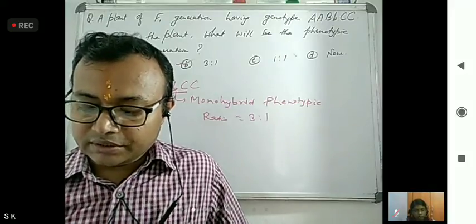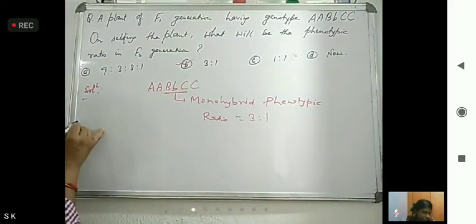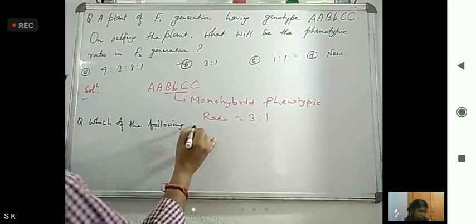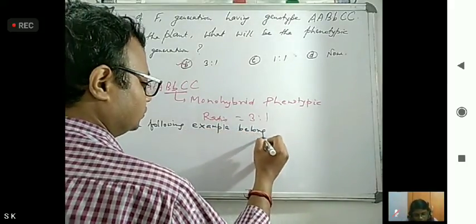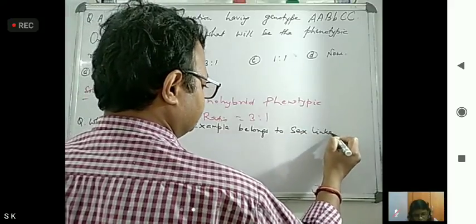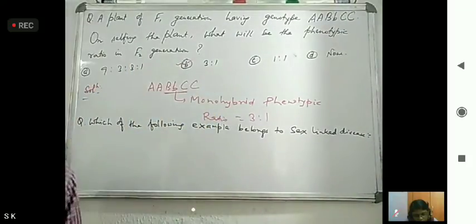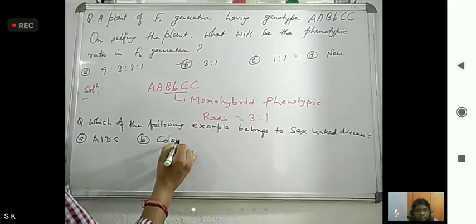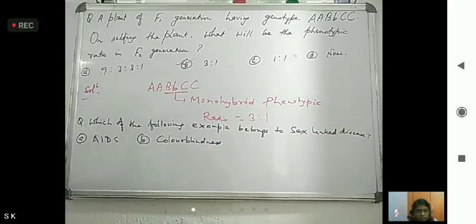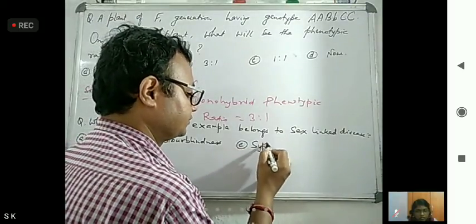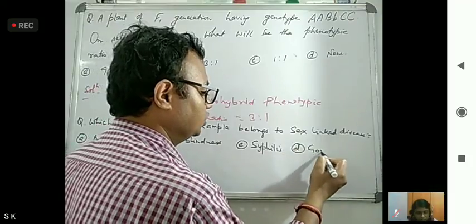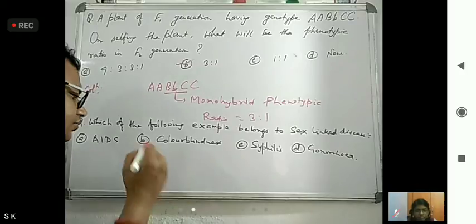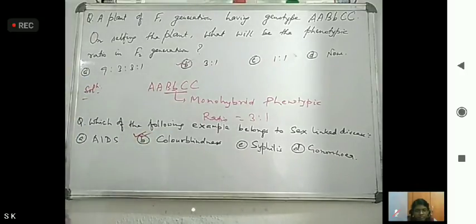Next question: which of the following is an example of a sex-linked disease? Options are AIDS, color blindness, syphilis, or gonorrhea. We already discussed that sex-linked diseases include color blindness and hemophilia. So color blindness belongs to sex-linked disease.